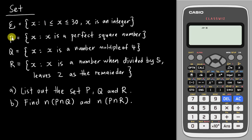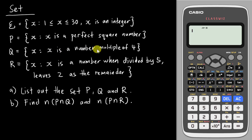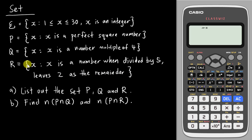They also tell you the sets P, Q, and R. Set P is the perfect square numbers, like 1, 4, 9 and so on. Q is the multiples of 4, like 4, 8, 12 and so on. And R is a number that when divided by 5 leaves 2 as the remainder.